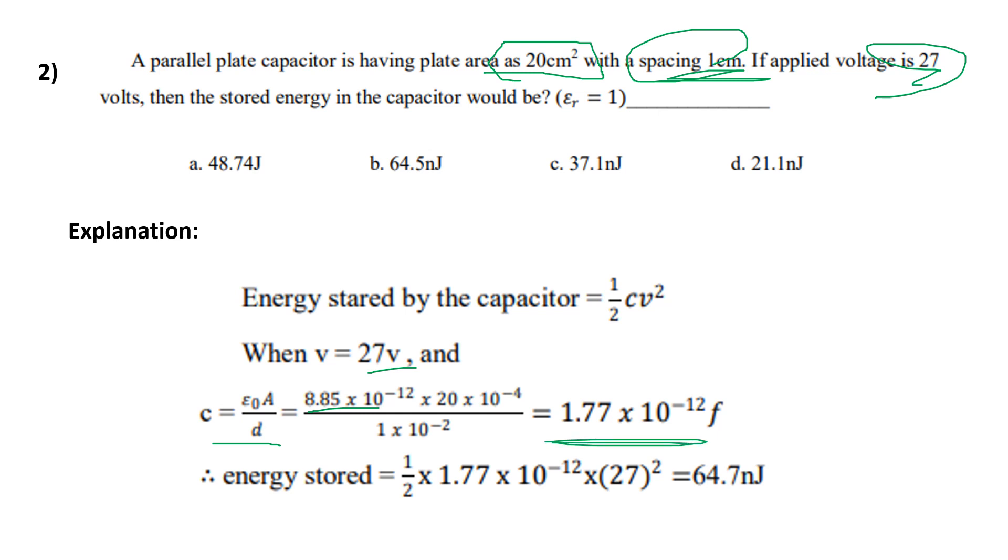Final answer: energy stored equals 1/2 CV squared. So 1/2 into C value 1.77 into 10 power minus 12 into 27 voltage V squared. The value is 27 whole squared.